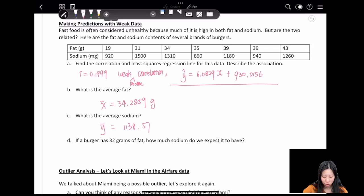If a burger has 32 grams of fat, how much sodium do we expect it to have? We plug in x equals 32 into our regression model, so our prediction is 6.829 times 32 plus 913.159, which equals 1125 milligrams. So if a burger has 32 grams of fat, you would expect it to have 1125 milligrams of sodium. We can still use this to make a prediction, but this prediction is not going to be really accurate because of the weak correlation.